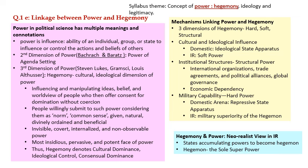The final question, 1E: 'Linkages between power and hegemony.' This comes from the syllabus theme 'concept of power, hegemony, ideology.' In political science, nothing is more important than power. Every political actor wants to maximize their interest, and power is the only tool for that — whoever has more power can maximize their interest. Power has several dimensions and connotations. The simplest: power is the ability of an individual, group or state to influence or control the actions and beliefs of others.